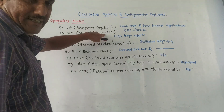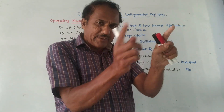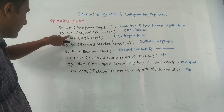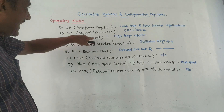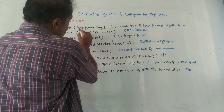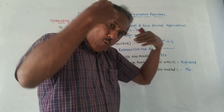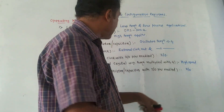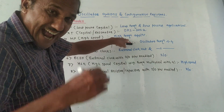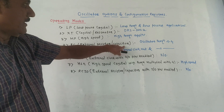In XT mode, a crystal or resonator is connected between the OSC1 and OSC2 pins of the PIC microcontroller. Third is HS — high speed operations. As the name indicates, it is applicable for high frequency applications and it takes more current, whereas LP is a low power mode applicable for low current applications. Next is RC, that is external resistor or capacitor mode. In this case, the oscillator frequency is divided by 4.